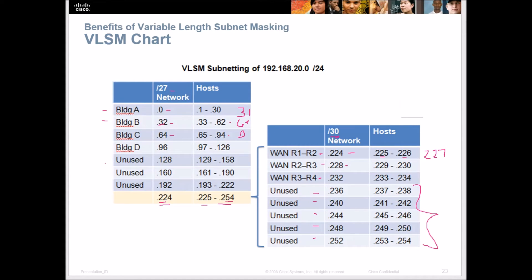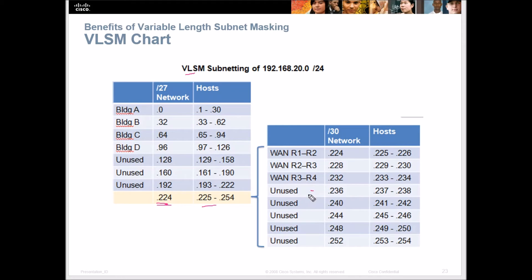Hopefully you can see from this demonstration how easy it is to subnet out for a variable length subnet mask. They used the bottom range for numbers; I prefer using the top range and leaving a gap in between. They know that if they have to add more routers, they have five more subnets available with two hosts each. That's how it's broken down.